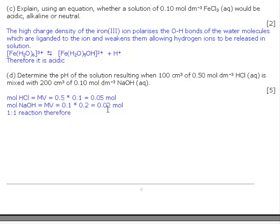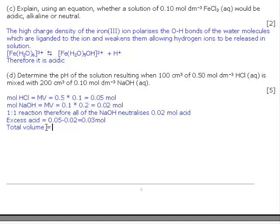Therefore all of the sodium hydroxide neutralizes 0.02 moles of acid. So excess acid equals 0.05 minus 0.02 equals 0.03 moles. Total volume equals 300 ml which is equal to 0.3 liters.